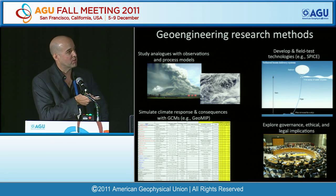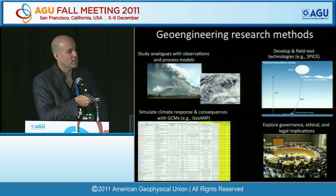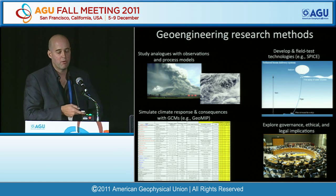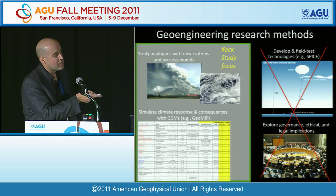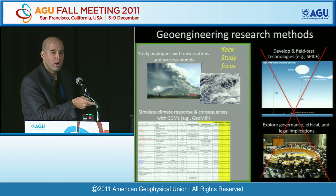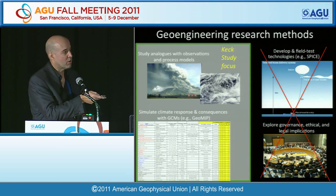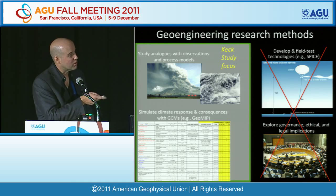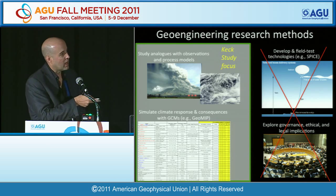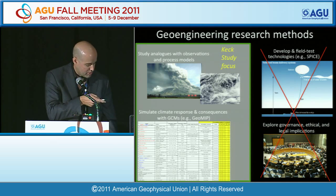The two analogs people are most familiar with are large volcanic eruptions simulating stratospheric aerosol injection, and ship tracks as analogs for marine boundary layer cloud seeding. The Keck study is intentionally not addressing governance or field testing, because there are programs addressing them. We've chosen to focus on analog studies with observations, process models, and leveraging GeoMIP.